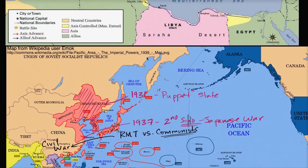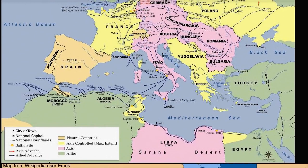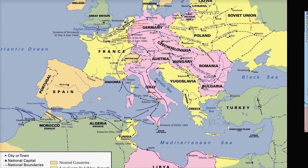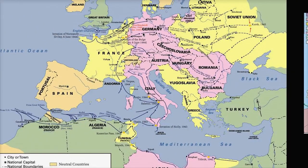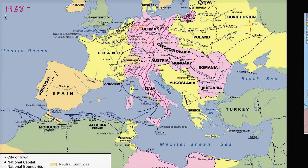Let's also remind ourselves what's happening in Europe. As we go through the 1930s, Hitler's Germany — the Nazi Party — is getting more and more militaristic. They're allied with Benito Mussolini's Italy. Both are extremely nationalistic and both do not like the Communists at all. In 1938, you have the Anschluss — the unification with Austria.